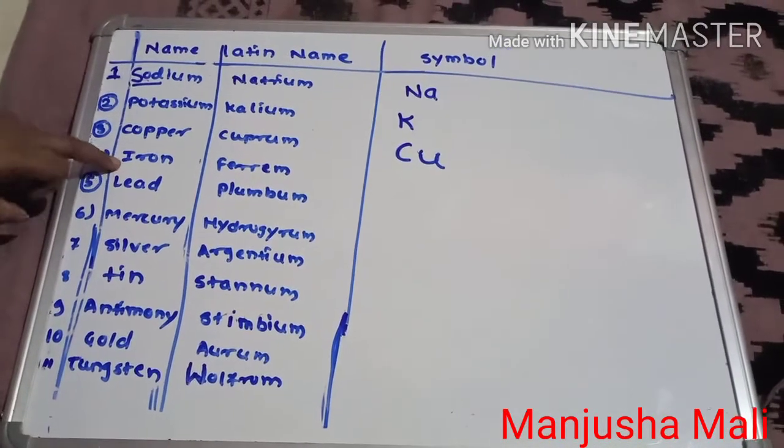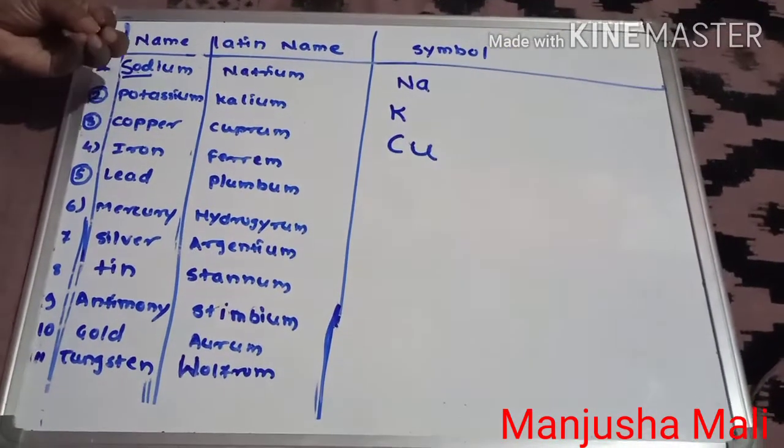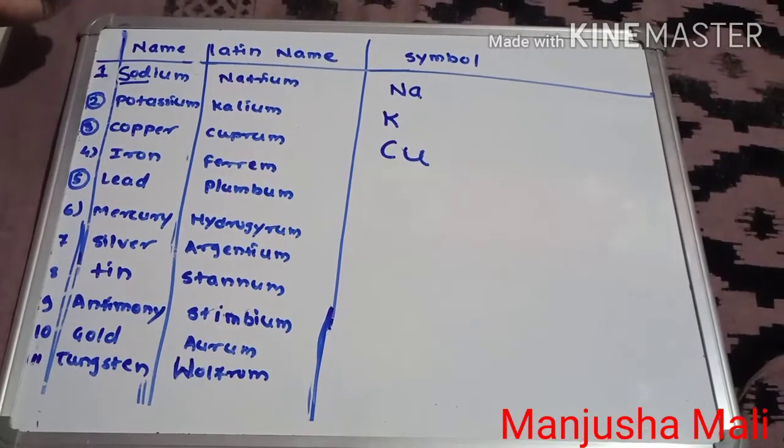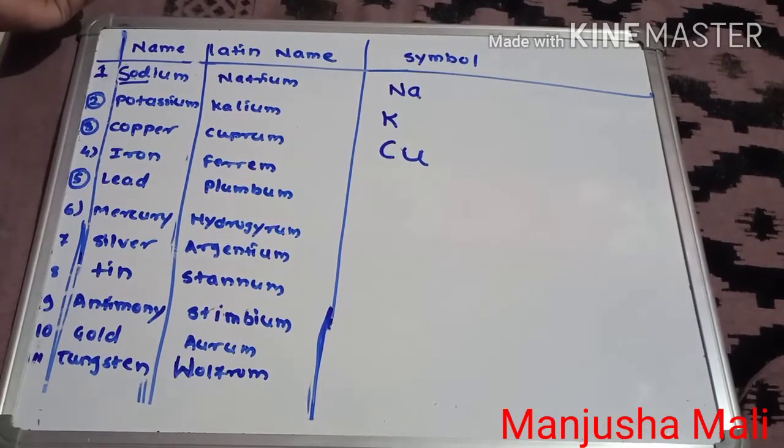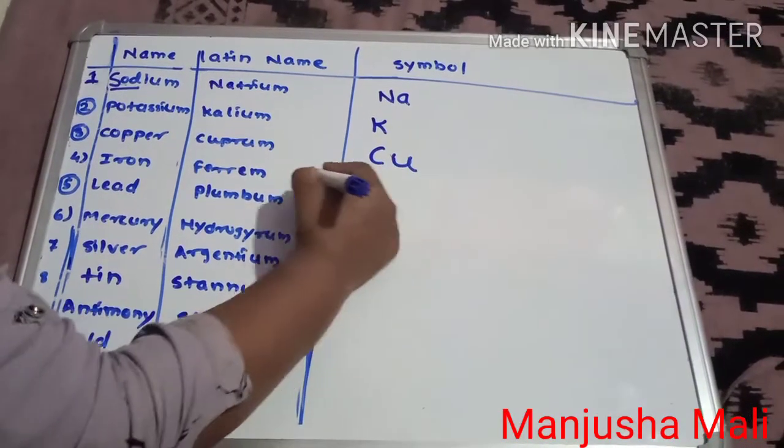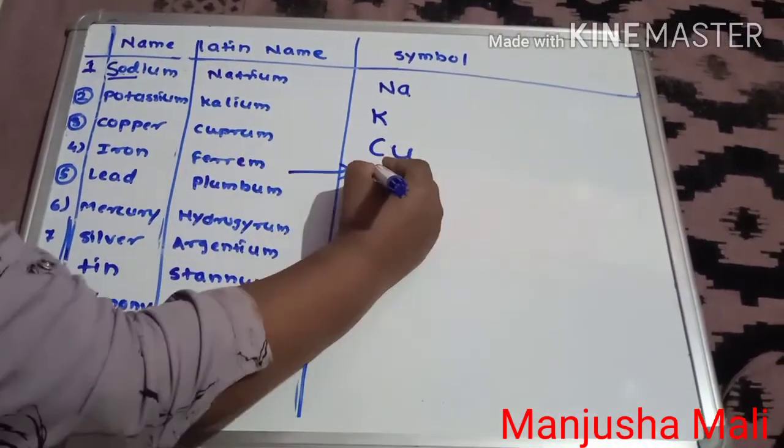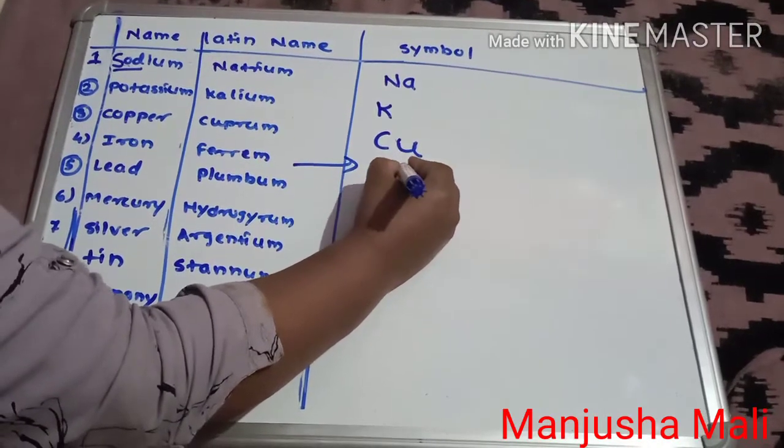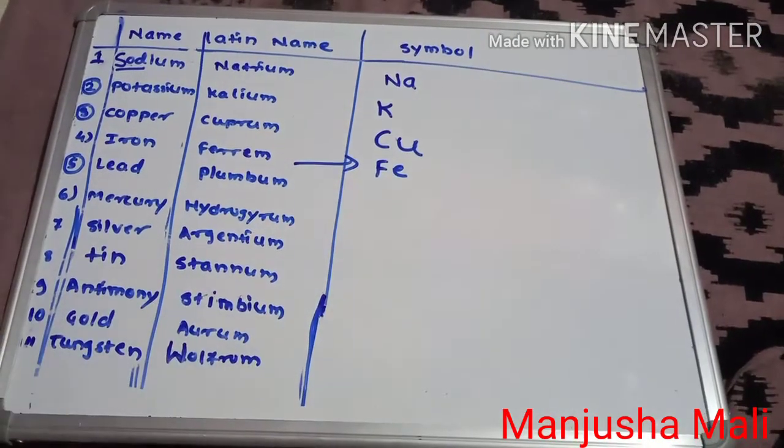Iron. Now you will find a ferrous sulphate, ferric, which means that you have a homeopathy medicine, then ferrum phos, etc. Which means ferrum means that it's iron. So ferrum, ferrous, ferric. Symbol is Fe.